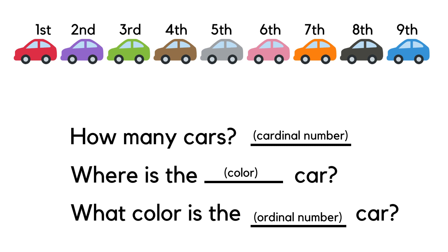Where is the purple car? The purple car is second. Where is the gray car? The gray car is fifth. You could practice that with all the different colors. You could also ask: what color is the fourth car? The fourth car is brown. What color is the ninth car? The ninth car is blue.